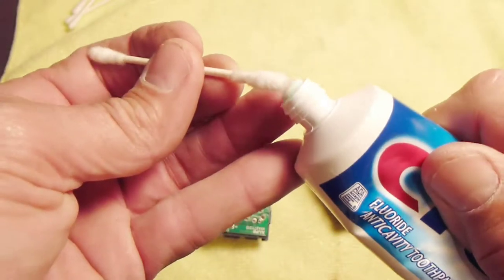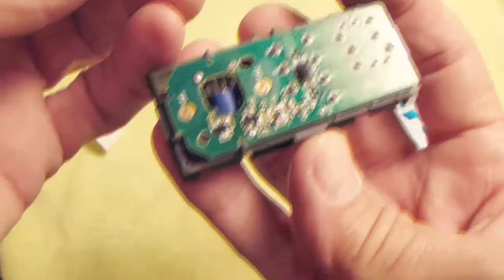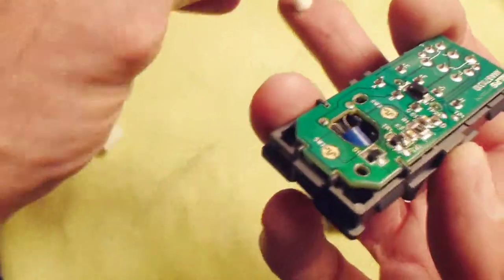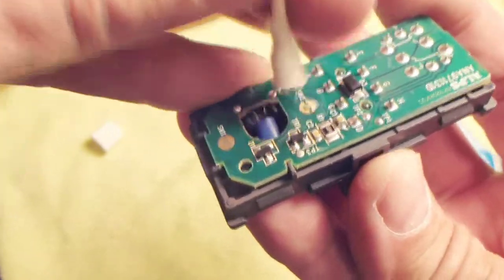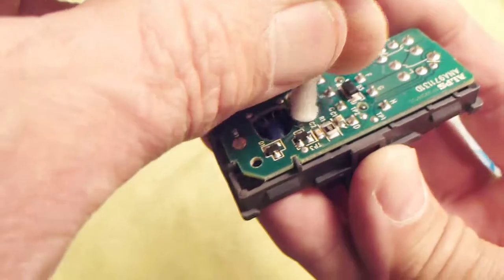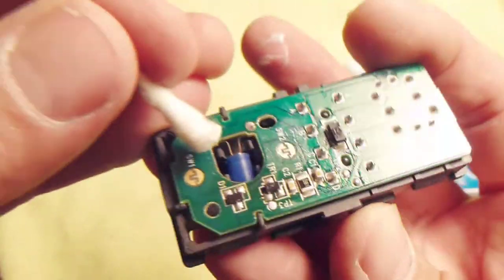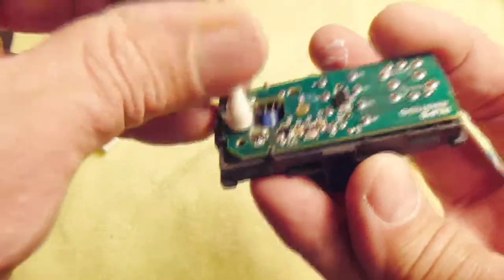So we're going to use a little toothpaste to scrub it off. And I put a little too much on there so I'm going to rub some off on my finger. Okay, so let's go ahead and just scrub those contacts nice and clean. Doesn't take too long. Just make sure you get them nice and shiny. Get all the stuff off of there.